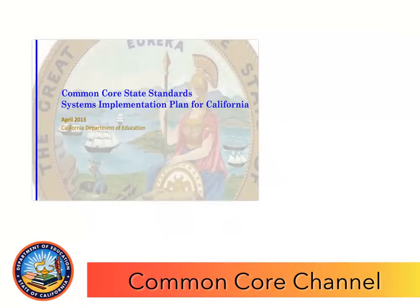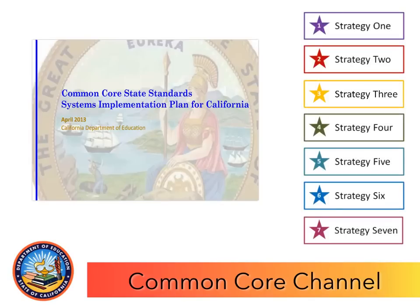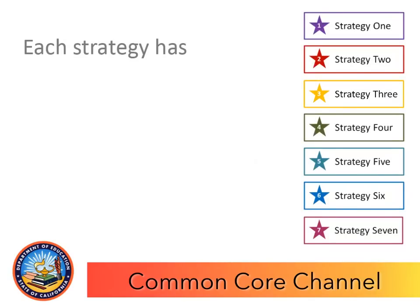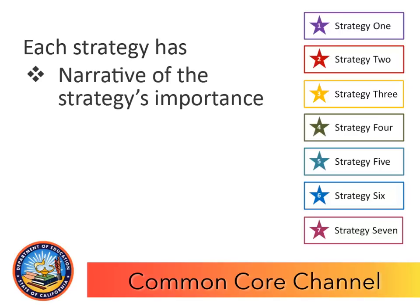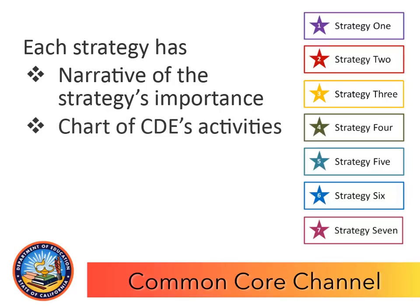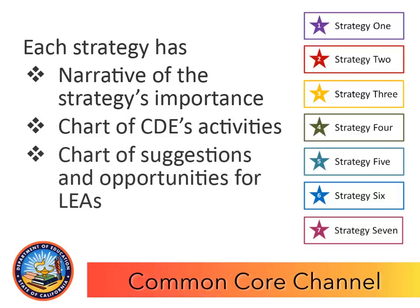The plan's implementation activities are detailed in seven overarching strategies. Each strategy has three sections: a narrative section explaining the importance of the strategy, a chart showing CDE's activities, and a chart offering suggestions and opportunities related to the strategy for local educational agencies that are developing their own local Common Core plans.